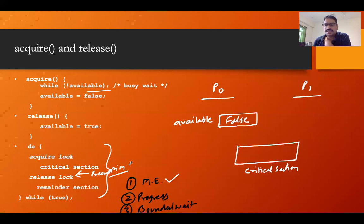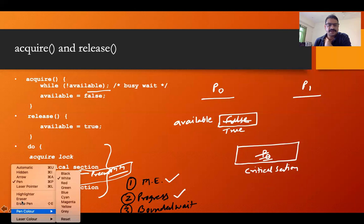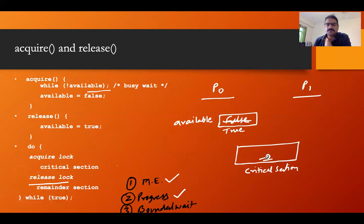However, in most textbooks, the assumption is that a process leaving the critical section will always execute the release function before being preempted. So you remain in the critical section until you call the release function — only then are you released. Under this assumption, if a process is in the critical section available will be false, and once it leaves and calls release, available becomes true. So progress is satisfied under this standard assumption.